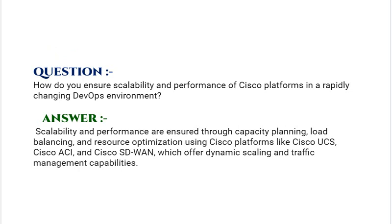How do you ensure scalability and performance of Cisco platforms in a rapidly changing DevOps environment? Your answer should be: scalability and performance are ensured through capacity planning, load balancing, and resource optimization using Cisco platforms like Cisco UCS, Cisco ACI, and Cisco SD-WAN, which offer dynamic scaling and traffic management capabilities.